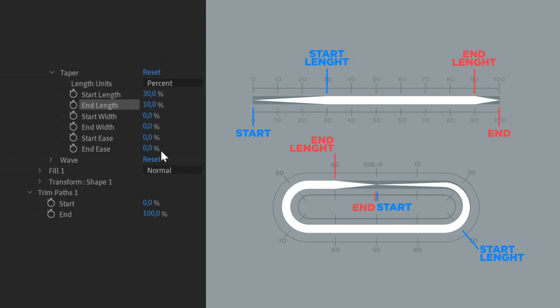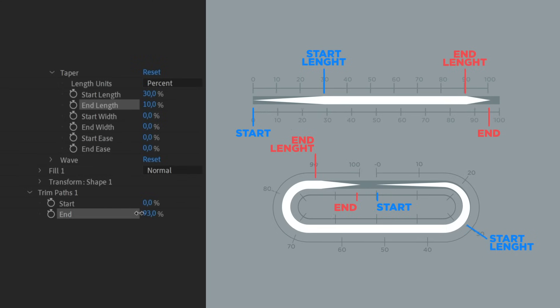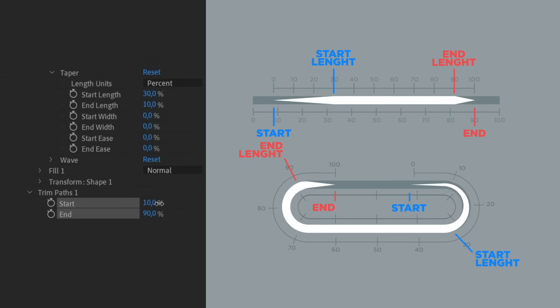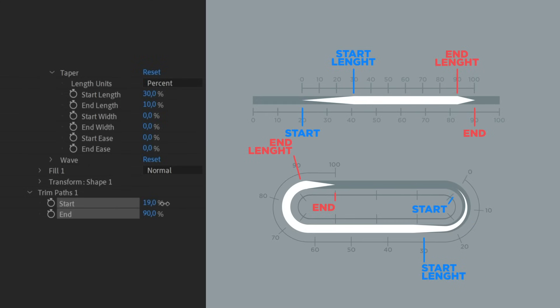But this percentage is relative to the visible stroke length. So if we apply a trim path — let's say the end at 90 and the start at 20 — then the percentage system of the taper will change accordingly to the new stroke length.